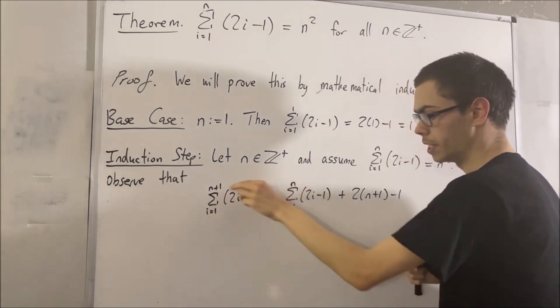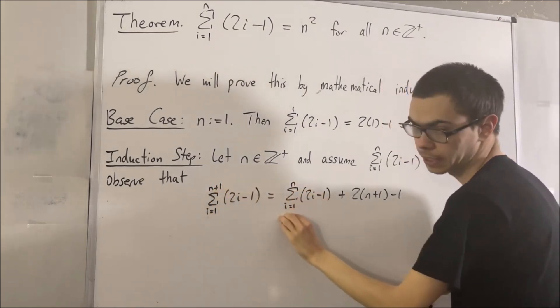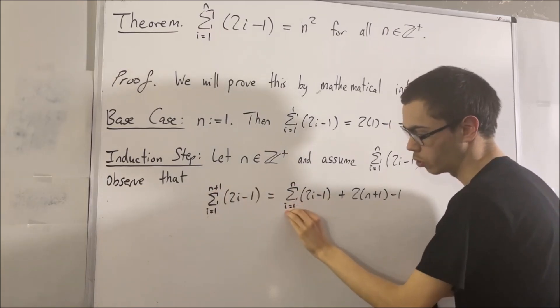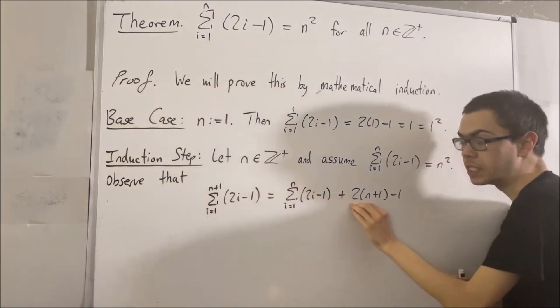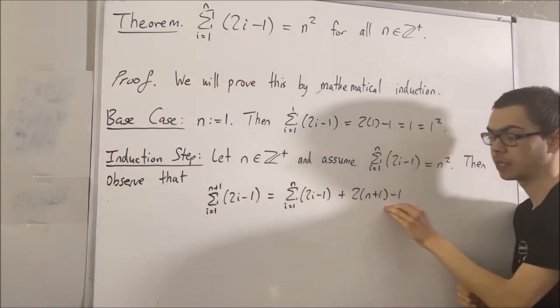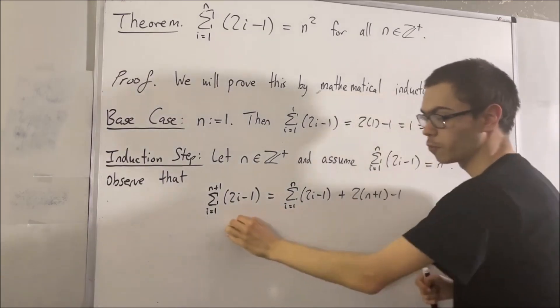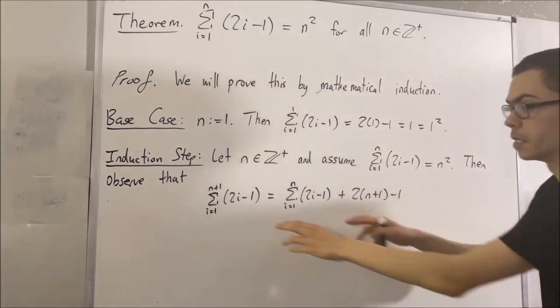Right? We're only going to take the sum up from i equals 1 to n. But then we still have that n plus 1 term here. Right? This just comes from the recursive definition of summations.